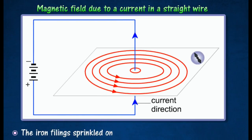The iron filings sprinkled on the card will set in concentric circles when the card is tapped lightly.